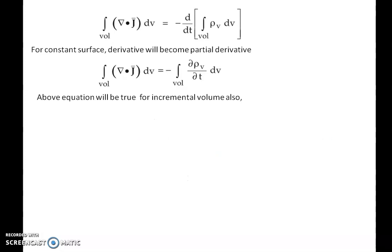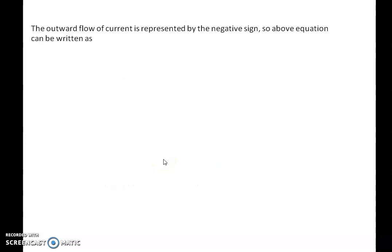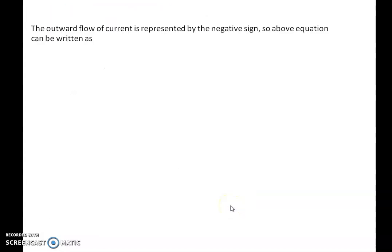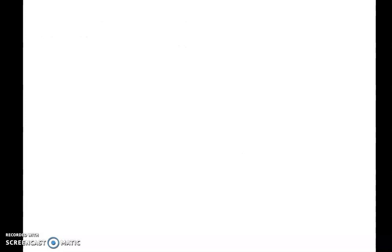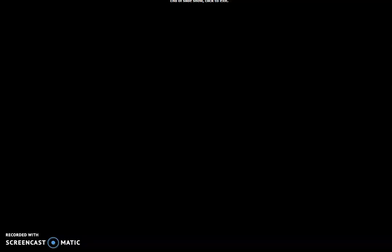So the continuity equation of current in integral form is i equals the surface integral of J dot dS equals minus dq by dt, and in point form or differential form it is del dot J equals minus partial rho V by partial t. In the next video, we will see what are conductors and dielectrics. Thank you.